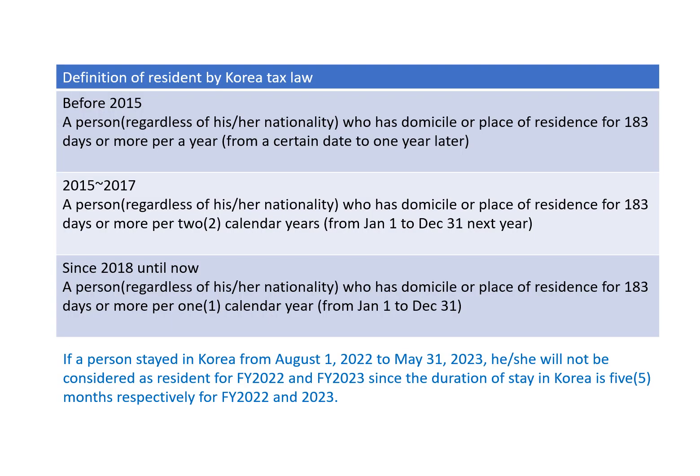The definition of a resident has changed over time. Before 2015, a person, regardless of nationality, who had a domicile or place of residence for 183 days or more per year — calculated from a certain day to one year later — was considered a resident. This was a little uncertain and had some arguable points.